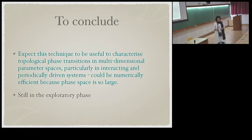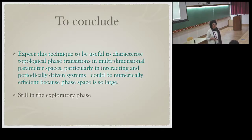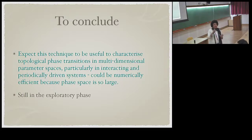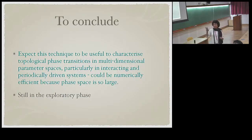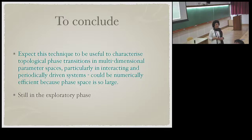Question: If you try to generalize this to three-dimensional time-reversal-invariant topological phases, what would be the equivalent curvature function? Answer: You need something that integrates to give the topological invariant — something like the time-reversal polarization. I've only seen cases where there is a natural integrand. For higher-order topological insulators where you don't have something that easily integrates to give the invariant, it's not clear whether it can be generalized. One would have to think carefully about how to do it; it's not straightforward.